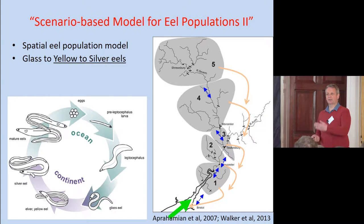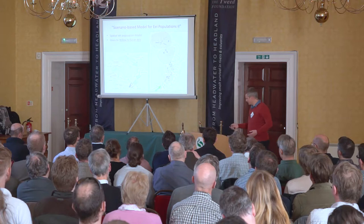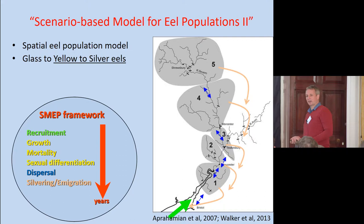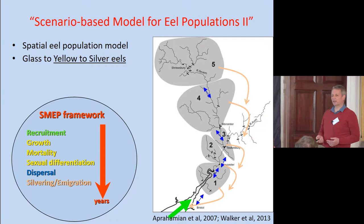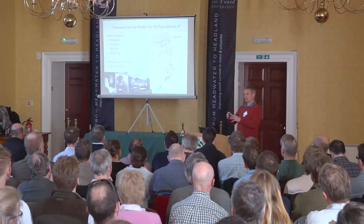For the eels we have a spatial eel model, as Ken said, which is based on reaches. This is a simple classification of the River Severn into five reaches. The way the model works is that we can input recruitment, we apply life history of growth, mortality, sexual differentiation of the eels — because they start undecided and then become males or females as they go on — dispersal through the system, and eventually silvering or emigration. The model has the potential to include human impacts — fisheries, turbines, barriers and stocking. But in the eel world, because we use the model on an index river and then apply it to a river basin district, it's at that larger area where we apply the human impacts.